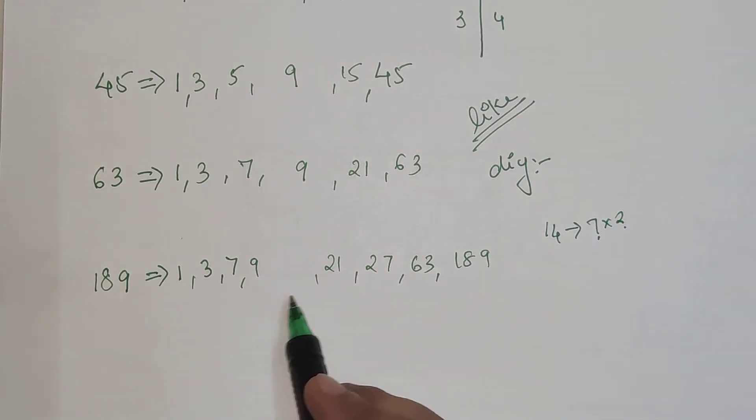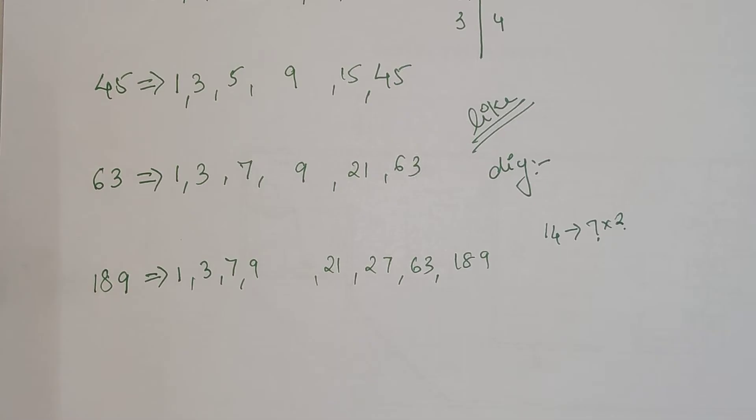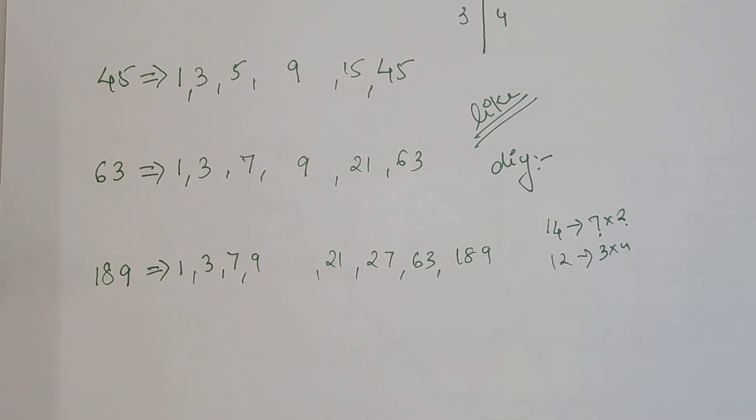14 is nothing but 7 into 2. So if I had the factor of 2 over here then I would have directly written 14, but we don't have 2, we just have 7. So I know that 14 cannot be a factor for 189. Similarly, 12 is 3 into 4 or 2 into 6. None of these numbers are here. From 3 into 4 only 3 is here, so I can completely discard 12.